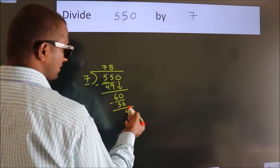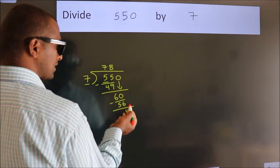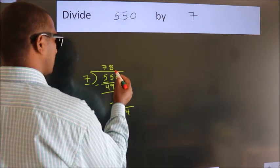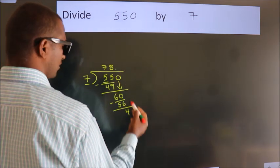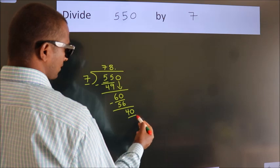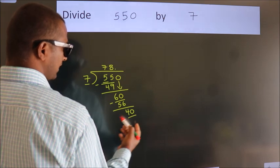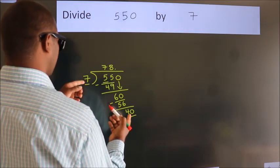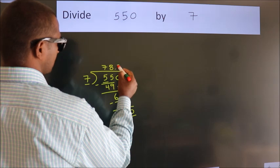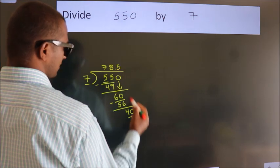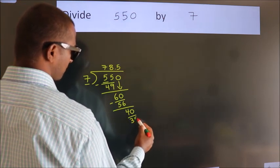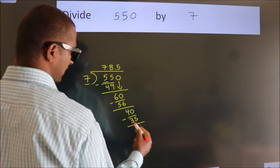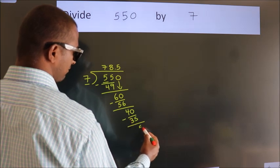After this, there are no more numbers to bring down. So what we do is put a dot and take 0, making 40. A number close to 40 in the 7 times table is 7 fives 35. Now we subtract, we get 5.